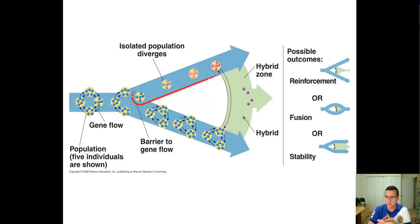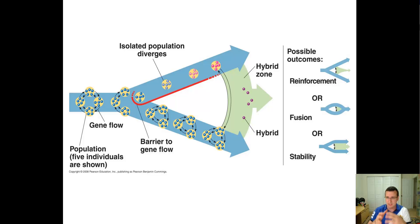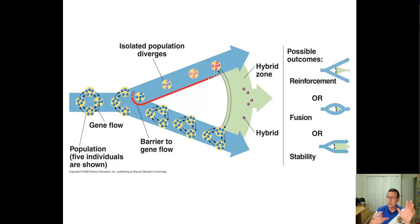Interesting things will happen in that hybrid zone in terms of evolution. Whenever the species are interchanging genes, if there's enough difference between them — say a behavioral, ecological, temporal, mechanical, gametic, or genetic difference — or maybe there's high zygote mortality, or the offspring can't reproduce, that's the whole hybrid fertility issue. If there's enough separation that they can't really successfully exchange genes, then you're going to get what is called reinforcement. That's when the populations diverge so much that even if there is a hybrid zone, they're not going to successfully interchange genes because the species are too different from each other.